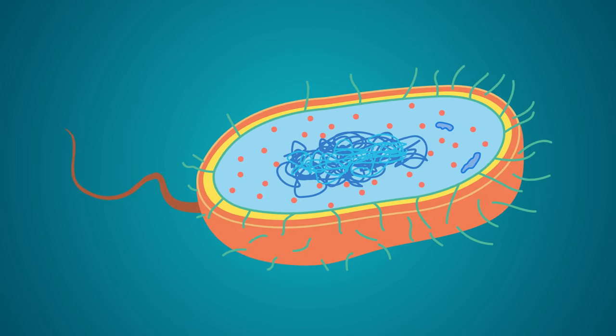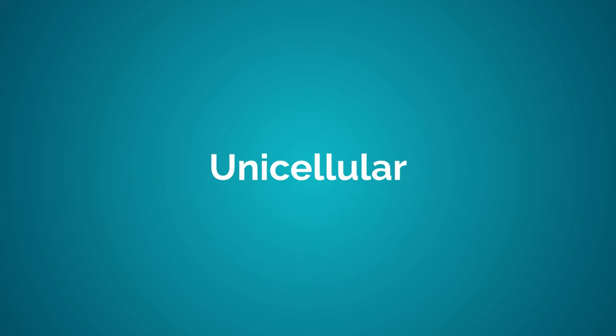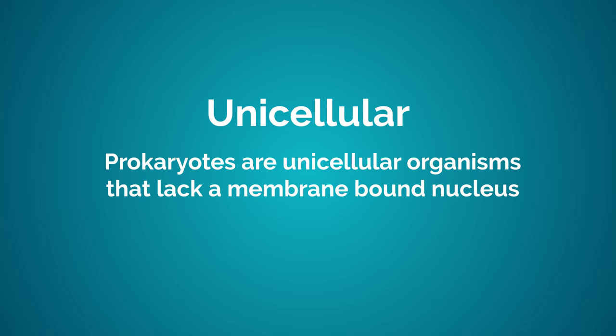So we know that prokaryotes don't have a nucleus and lack most other organelles. Our final thing to discover is that all prokaryotes are unicellular — they are defined as unicellular organisms that lack a membrane-bound nucleus.